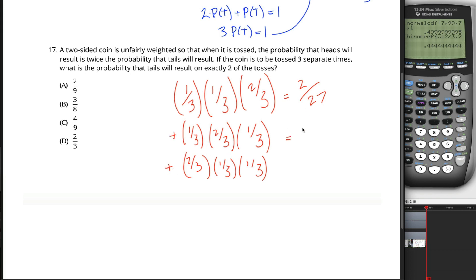If you multiply these three fractions, you get the same two over 27. Multiply these three fractions, you get two over 27. Then if you sum these three fractions, we have a common factor of three. You get two over nine, which is choice A, the answer to this question.